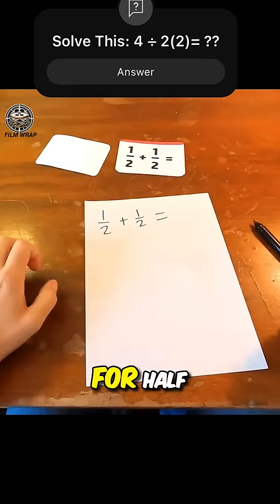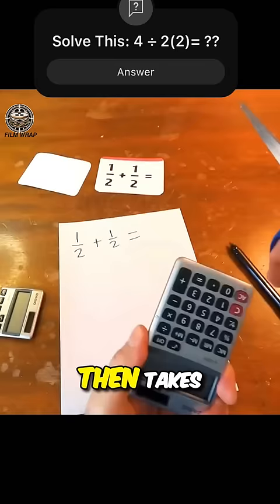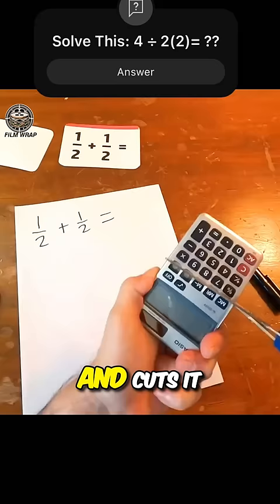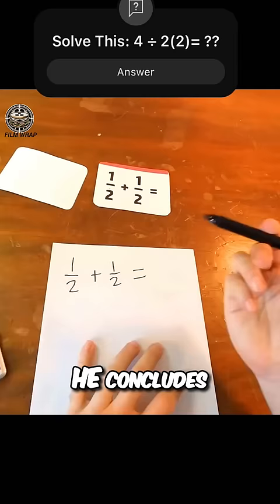For half plus half, he again takes out his calculator, but not to calculate. He cuts it in half, then takes out another calculator and cuts it in half again. Putting the pieces together, he concludes that the answer is 1.